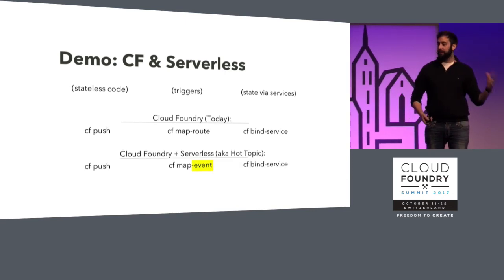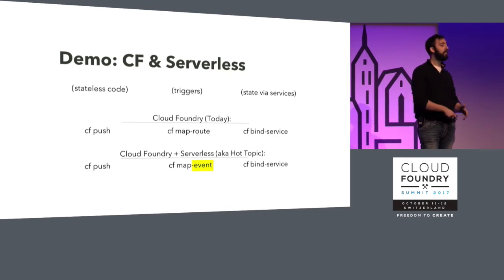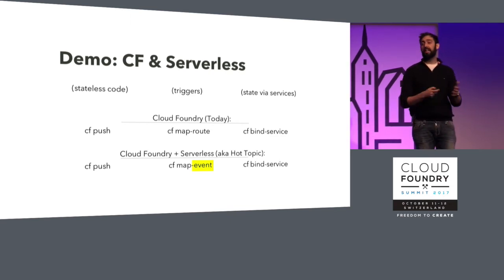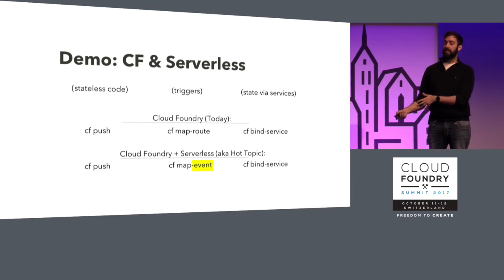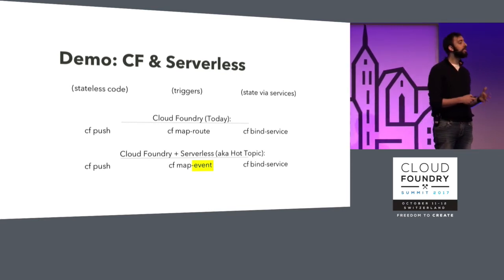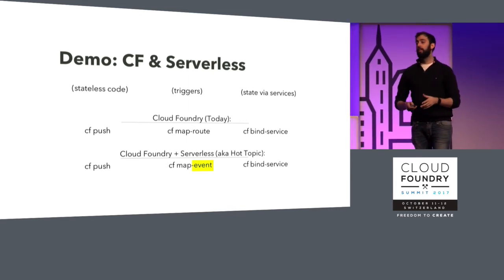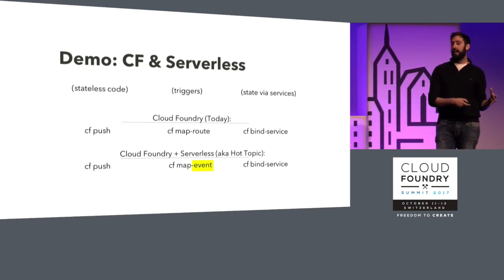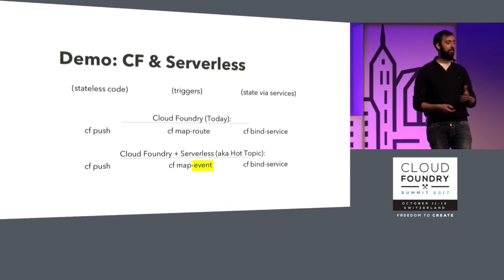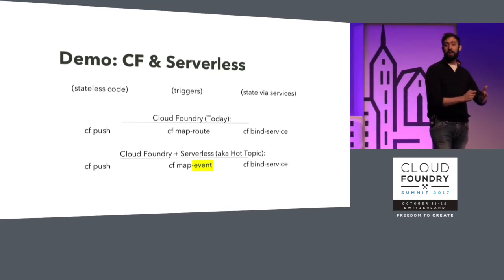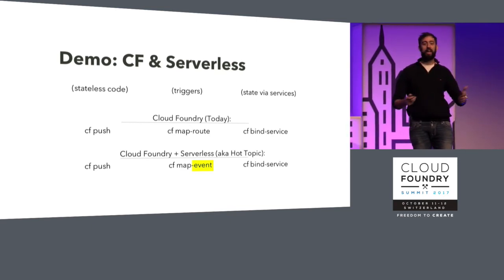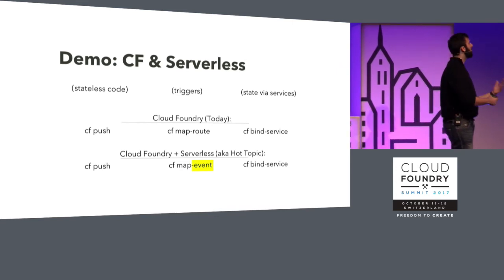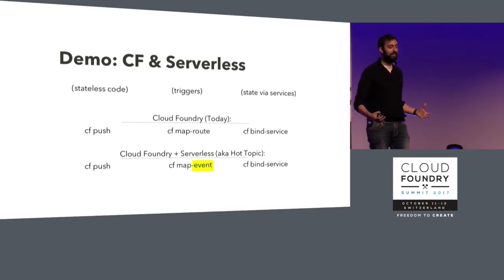The way it works today: CF push — just push my code. CF map routes — here's when you should run my code, when someone hits this URL. CF bind service — here's how you deal with all the stateful bits. For serverless: we still do CF push and bind service with the full service catalog so you're not locked in. Then we add one new thing: CF map events. Instead of saying run this code when this URL gets hit, we say run this code when this event happens, and the platform autoscales up and down based on the number of messages in that queue.